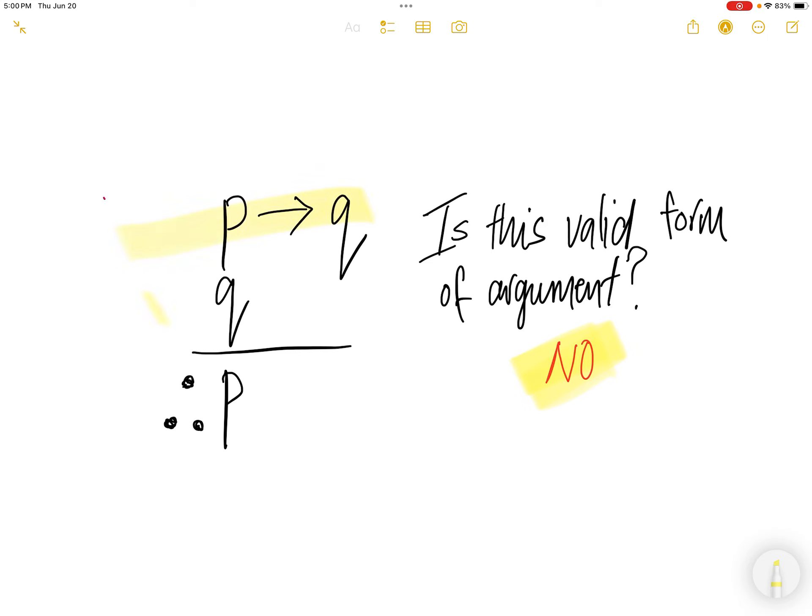We cannot say P implies Q and Q is true, P implies Q is true, Q is true, therefore P. This is a wrong form of argument.